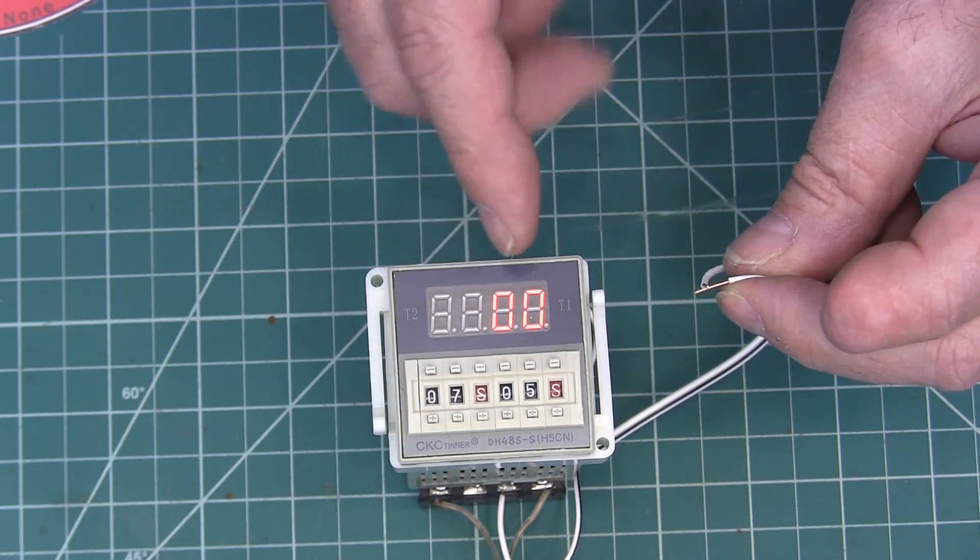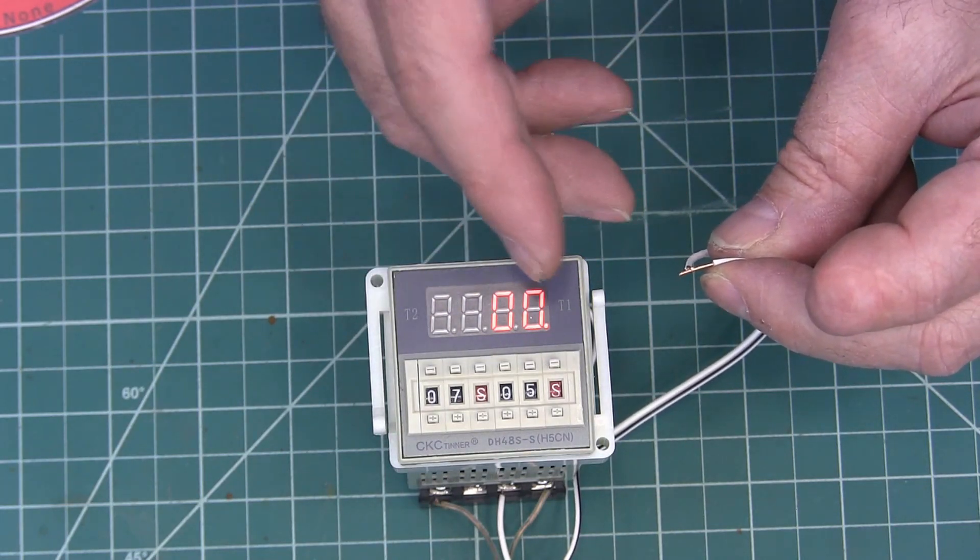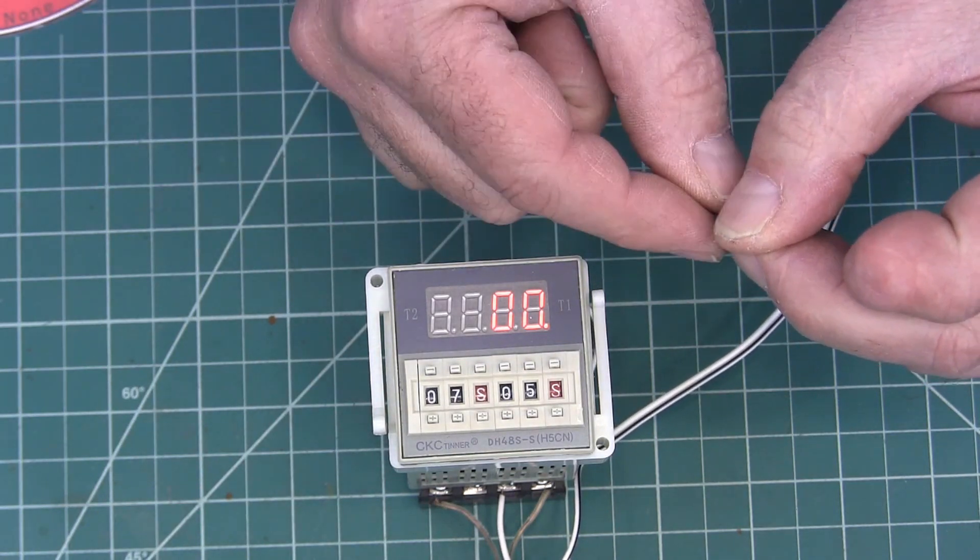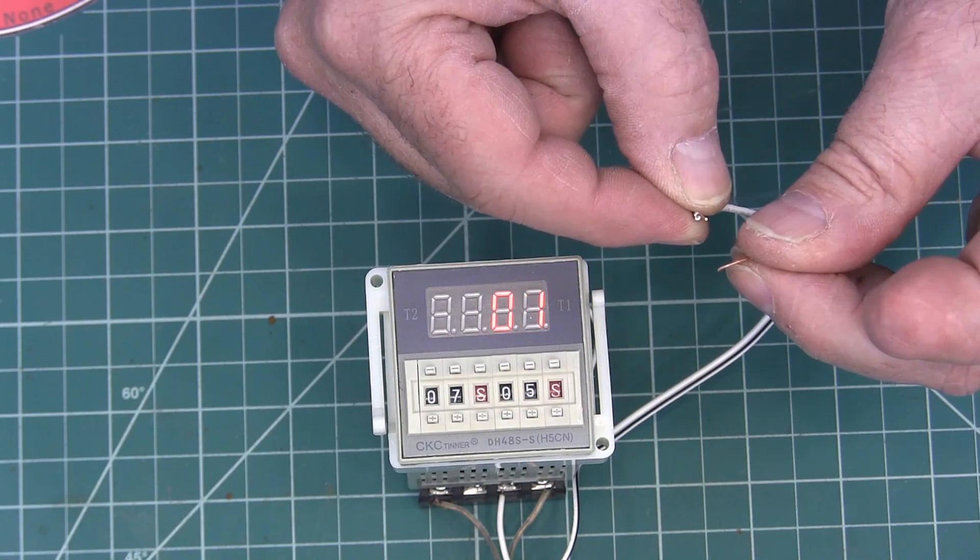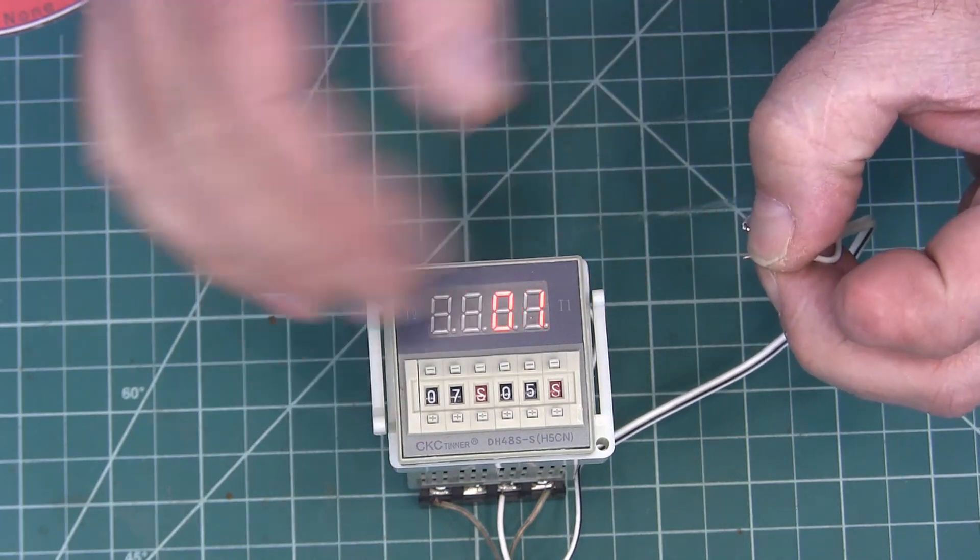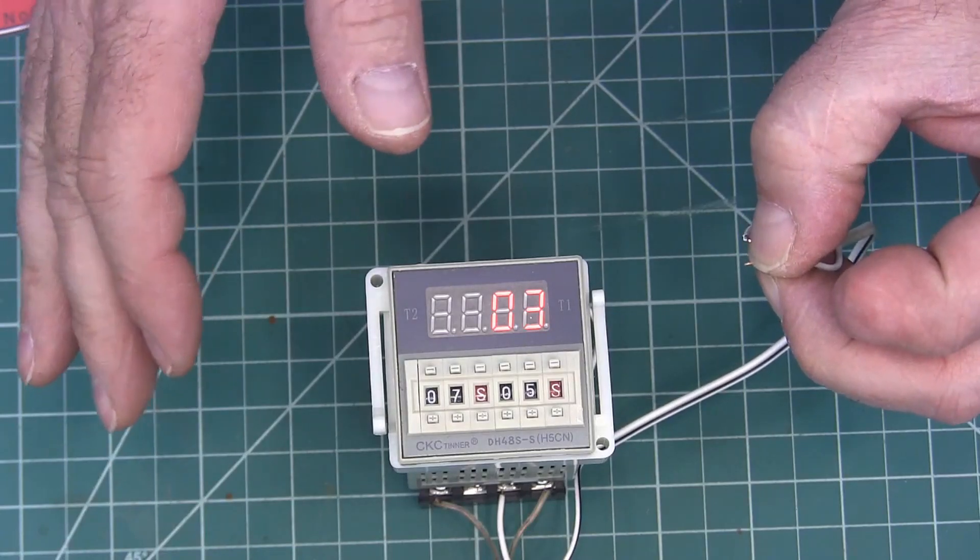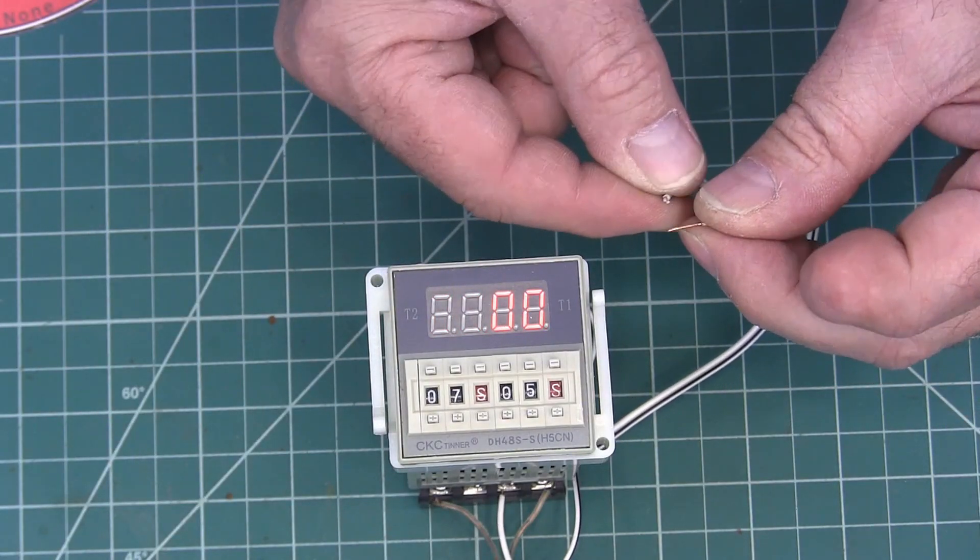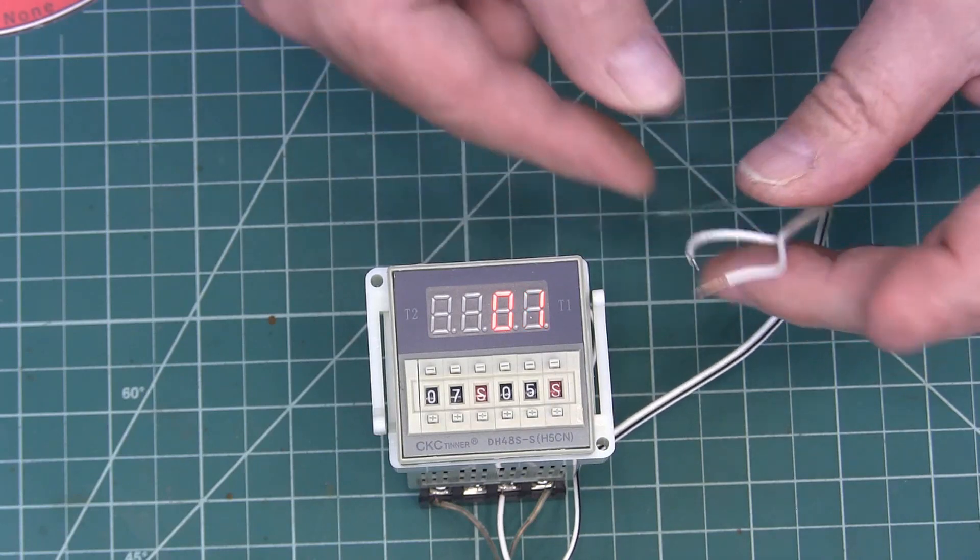If it's counting up to 10 and gets to one, two, three, four and you close the gate, it just holds it at four until you let it off. Then it'll count as long as it wants to until you hold the gate again. It doesn't clear, it doesn't reset, it just stops it at whatever point you touch that contact together.